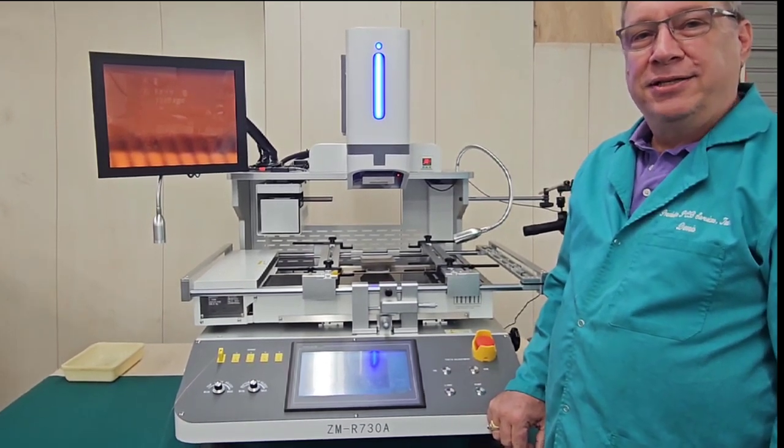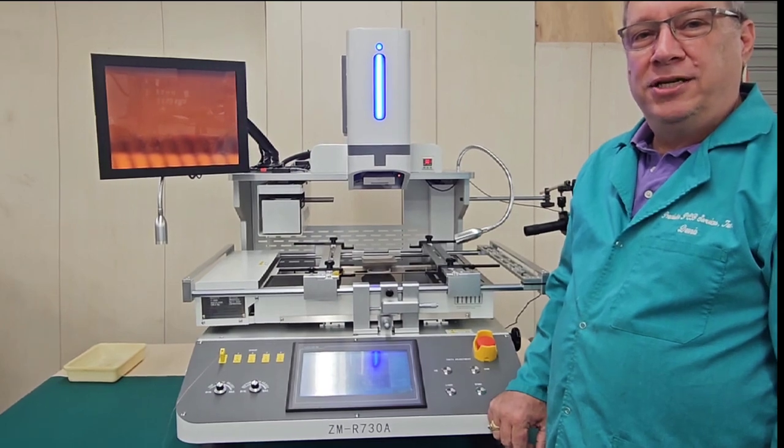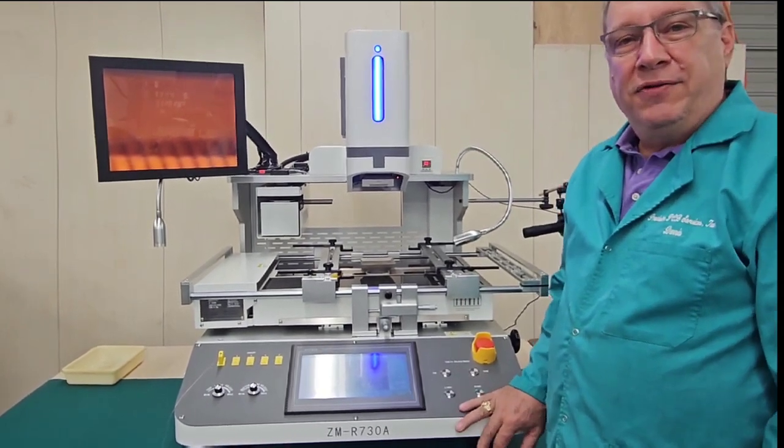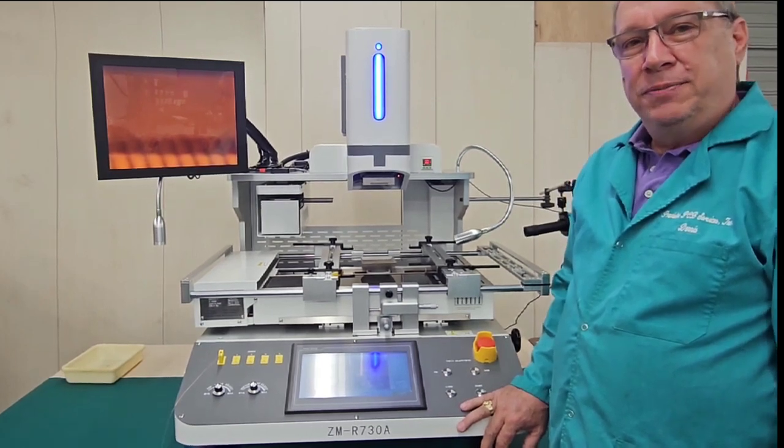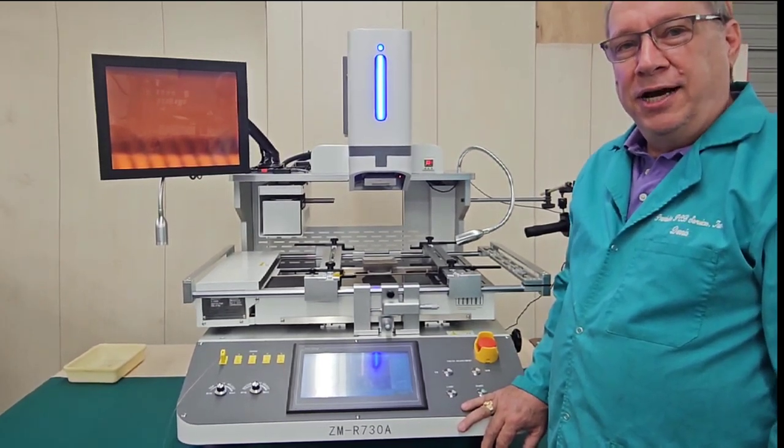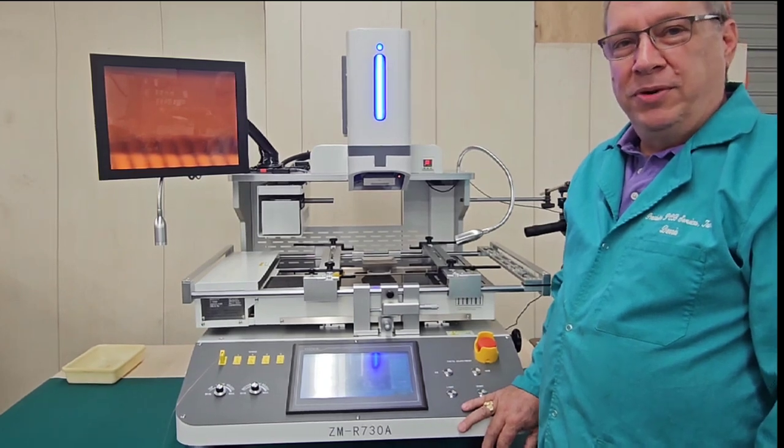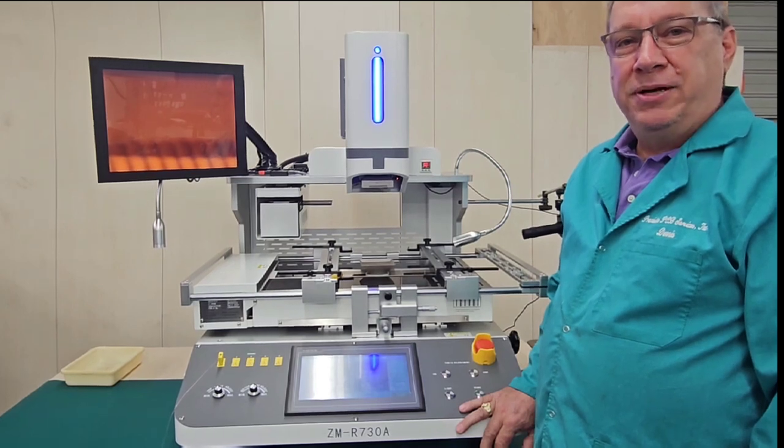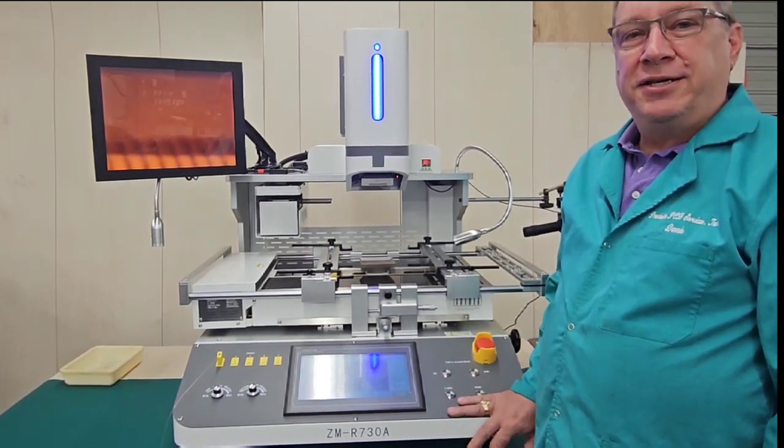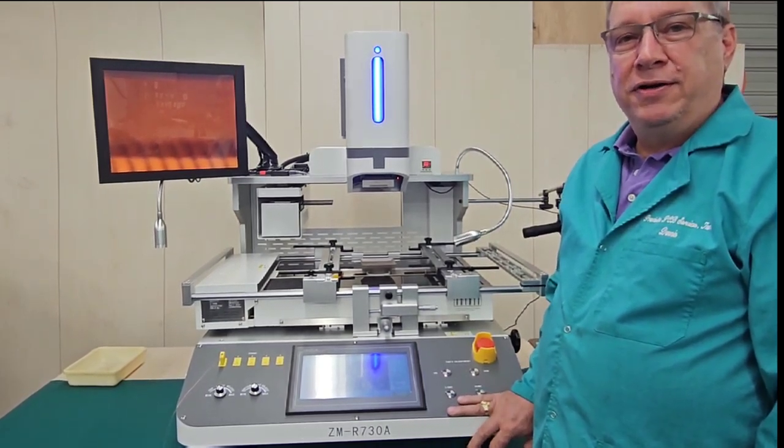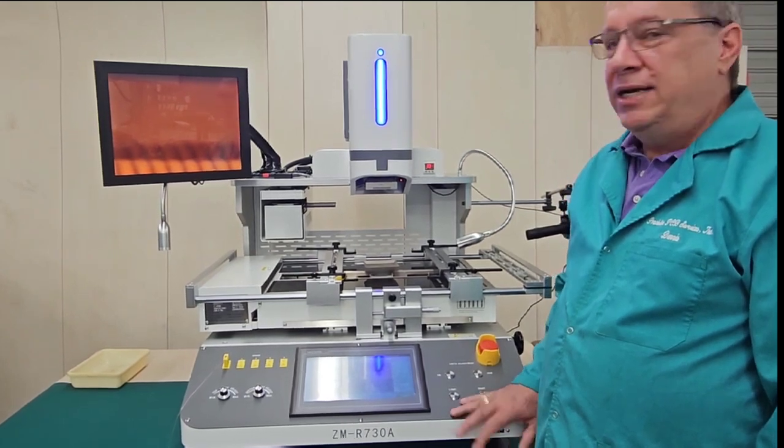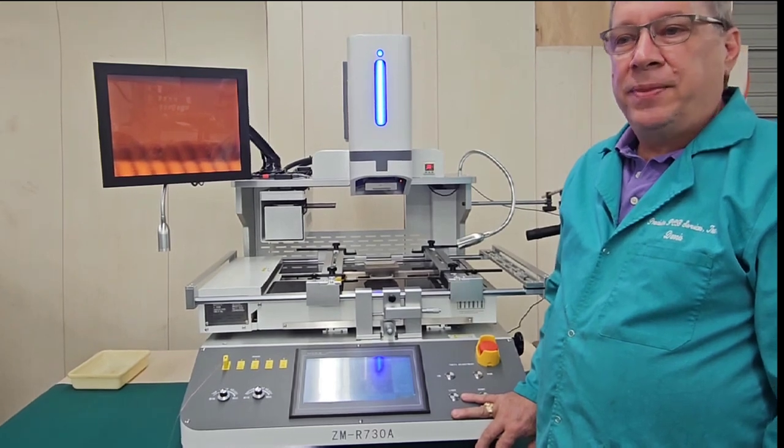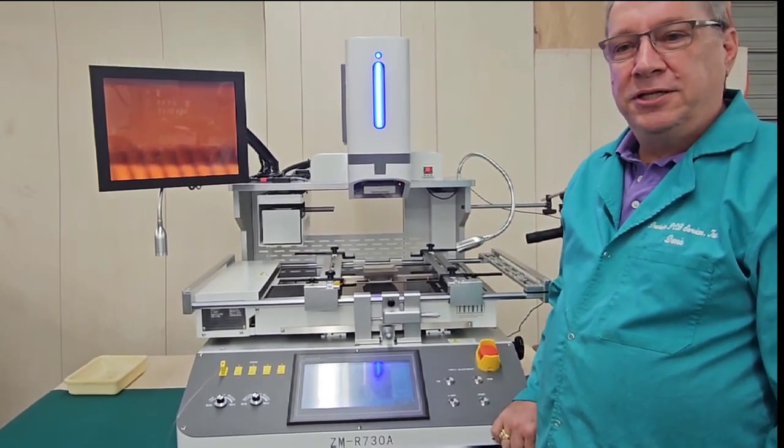Today we're going to demo the model ZMR730A VGA pre-workstation. This is a newer model that we have on the market and it can place extremely small chips and extremely large chips. It can place down to 0.1mm pitch and the standard machine will place up to 90mm chips. We can have them customized to place up to 150mm VGAs. Today we're going to do a video with a 55mm VGA and show you how to install it on the machine.